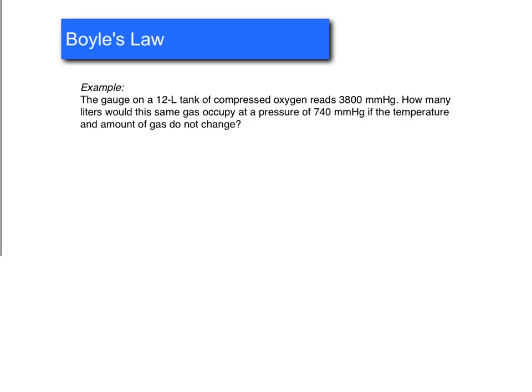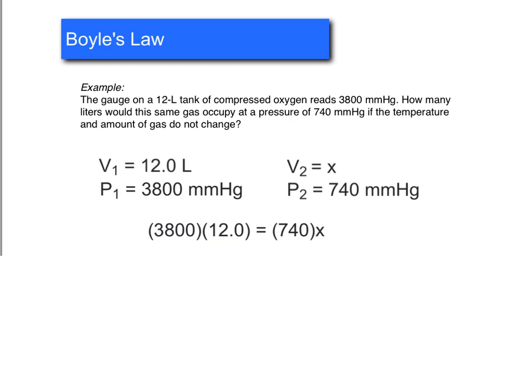Now here we have another Boyle's Law problem, but this time our unknown is the volume instead of the pressure. So here we have a gauge on a 12-liter tank of compressed oxygen reads 3,800 millimeters of mercury. So remember, millimeters of mercury is another unit of pressure. How many liters would this same gas occupy at a pressure of 740 millimeters of mercury if the temperature and amount of gas do not change? Okay, so our initial volume is going to be 12 liters, and our initial pressure is going to be 3,800 millimeters of mercury.